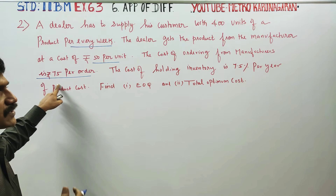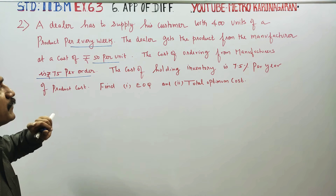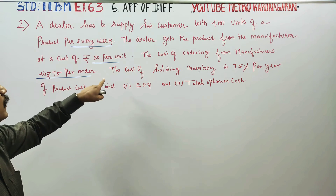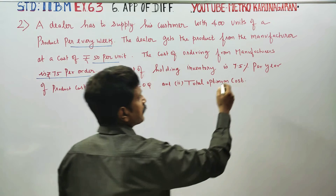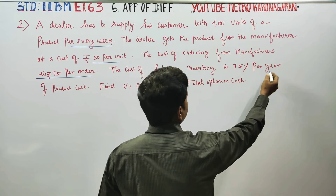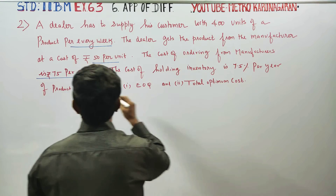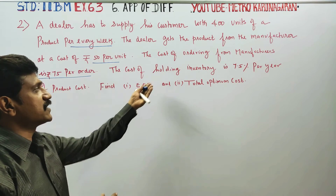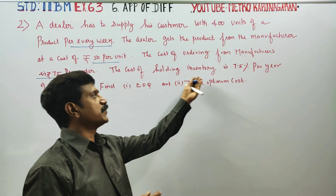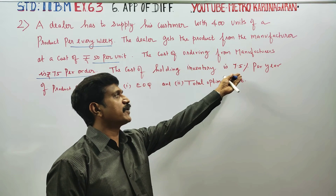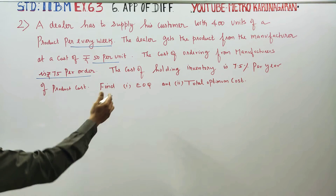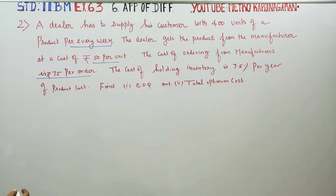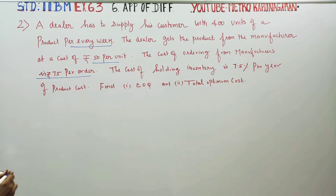The cost of holding inventory is 7.5% per year of the product cost. Find EOQ and Total Optimum Cost.